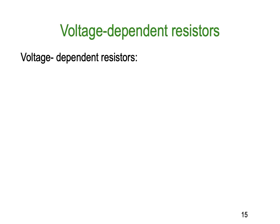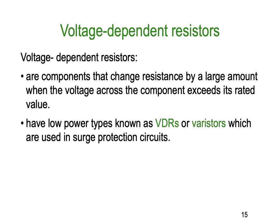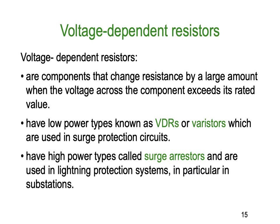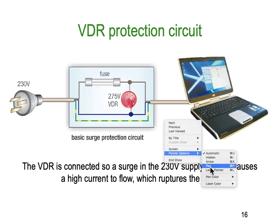The voltage dependent resistor (VDR) is used in protection systems. VDRs are components that change their resistance by a large amount when the voltage across them exceeds the rated value. Low power types are known as VDRs or varistors, used in surge protection in small appliances. High power versions are called surge arresters, used for lightning protection systems in large substation applications. Both are VDRs — varistor for small appliance applications, surge arrester for large energy applications.